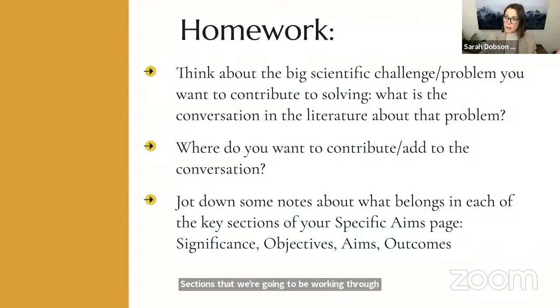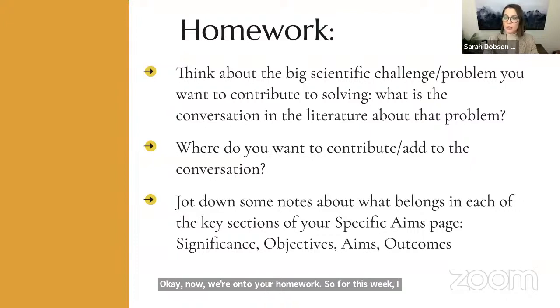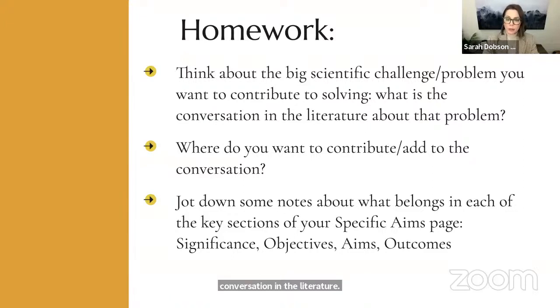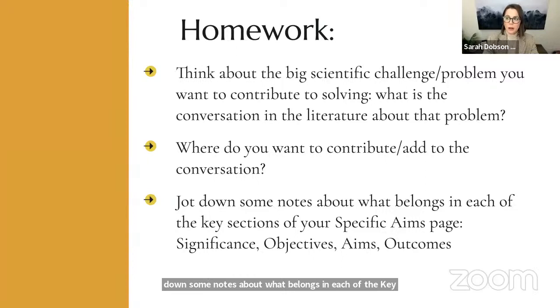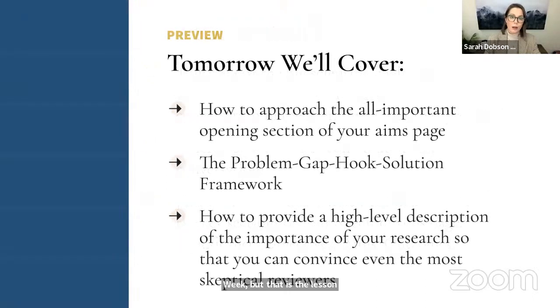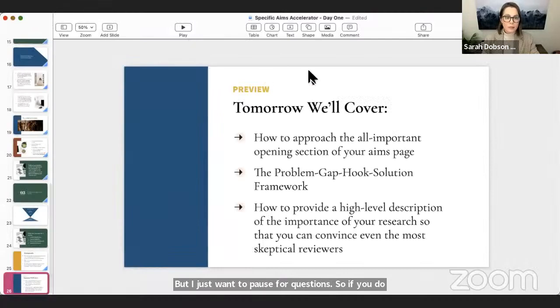Now we're onto your homework. For this week, I want you to think about the big scientific challenge or problem you want to contribute to solving. What is the conversation in the literature about that problem? Where do you want to contribute and add to the conversation? Then jot down some notes about what belongs in each of the key sections of your aims page: significance, objectives, aims, and outcomes. That's what we're going to work on tomorrow and for the rest of the week. That is the lesson for today — I'll pause for questions now.